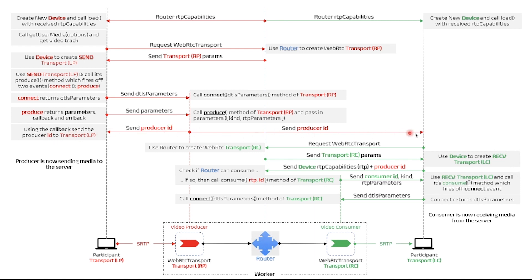We also send the producer ID to the consuming peer. On the consumer side, the process of requesting the transport creation and return of parameters is exactly the same as that of a producer. But for the consumer, we need to create a local receive transport — remember, for the producer we created a send transport. We then extract RTP capabilities off the device and, together with the producer ID we received earlier, we send them back to the server. We check if the router can consume, after receiving the device's RTP capabilities and passing in the producer ID — basically it checks if the consumer is able to consume what is produced by the producer.